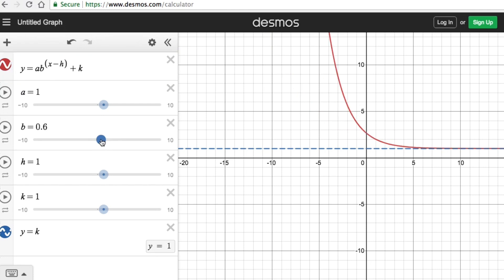Now let's look at the effect of a. When a is greater than 0, we can see that the graph of an exponential function is above the asymptote. If a is negative, the graph of the exponential function is below the asymptote.